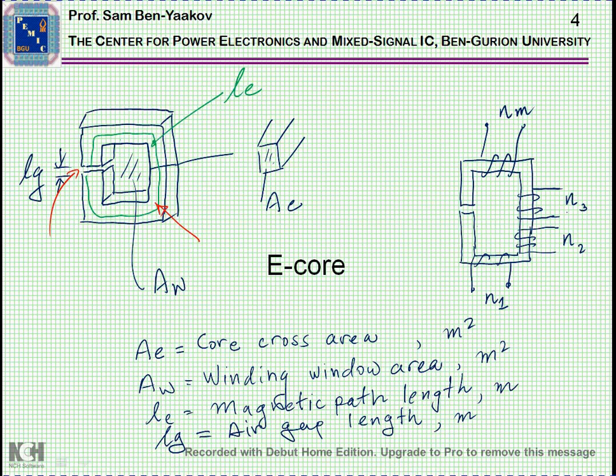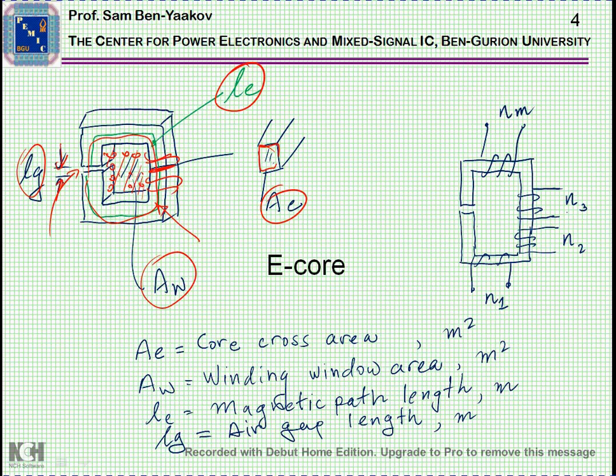The parameters of the core are the following. We have the magnetic path length, this is LE. We have the gap length, this is LG. We have the window cross area. This is where the windings are getting, and it's supposed to be filled with the wires to utilize the core. And then we have the cross section of the core, here it is, and this is AE. The winding area is AW.